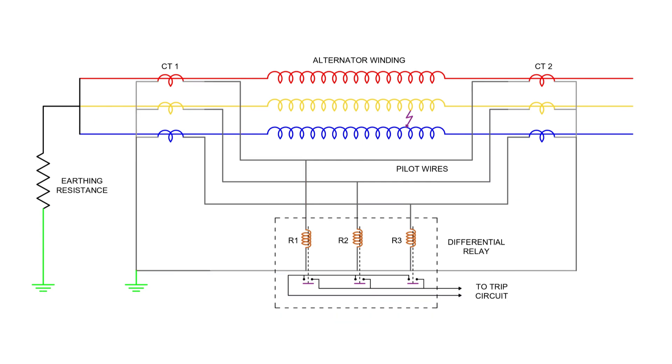Let's take another case. A short circuit fault occurs between phases Y and B. In this situation, short circuit current circulates via the neutral connection. CTs in the Y and B phases now detect unequal currents, and the difference flows through relay coils R2 and R3, closing their contacts and tripping the breaker. This way, any interturn line-to-line or line-to-earth fault inside the protected zone can be effectively detected and isolated.